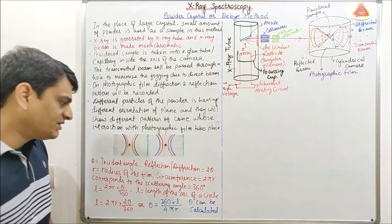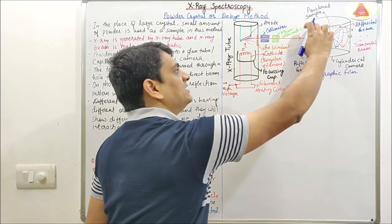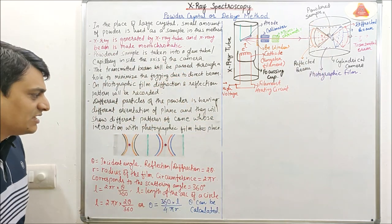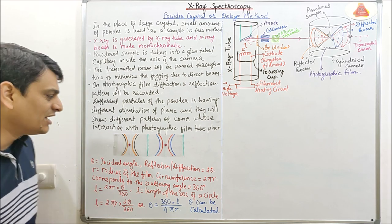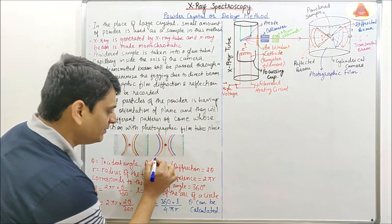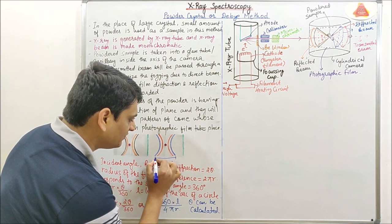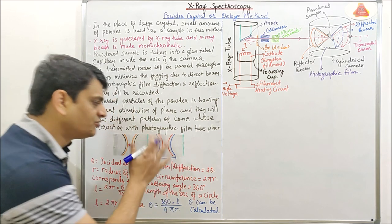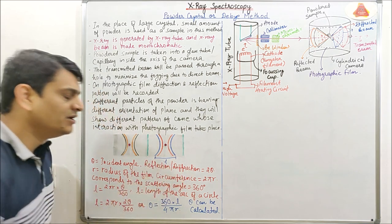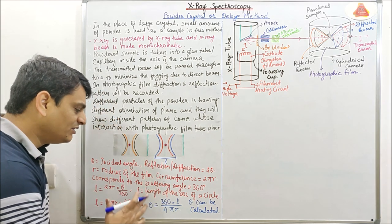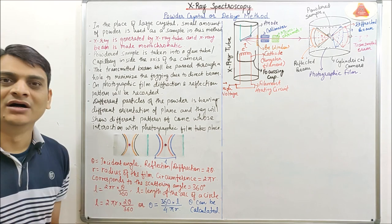In this equation, L is equal to the length of the arc of a circle, which will be the length between any two similar patterns. For example, it may be the distance between two corresponding blue color lines. So from the x-ray pattern we get the value of L, and by using this value and this formula we can calculate the value of theta.